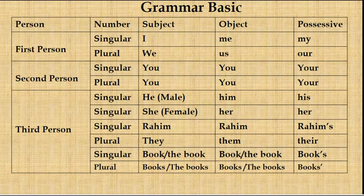In grammar, you have to know persons — first person, second person, third person — and there are singular and plural. For pronouns: I is the subjective form. If we use it as an object, I will be me. In the possessive case, you write my. So: I, me, mine. We, us, our. That means: I am a student. Give me a book. This is my book. Possessive case is very useful for you.